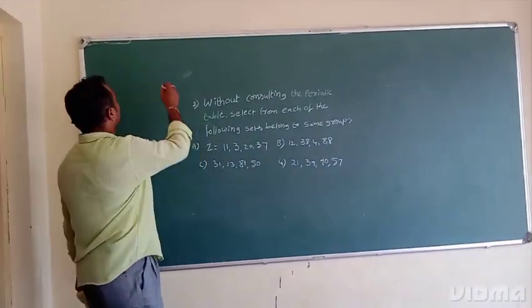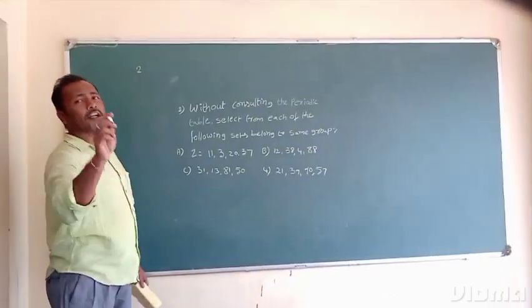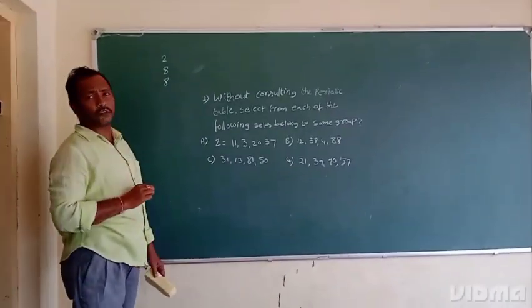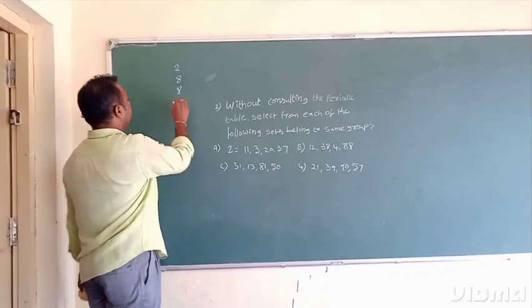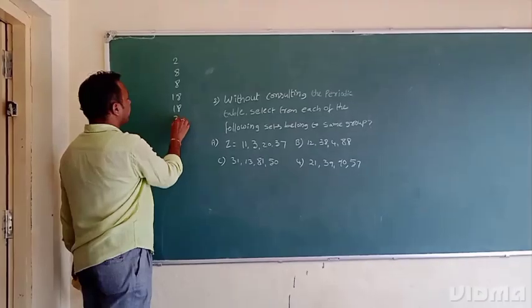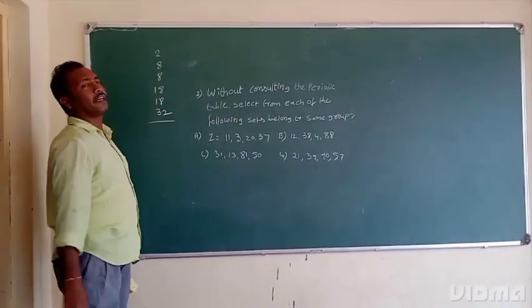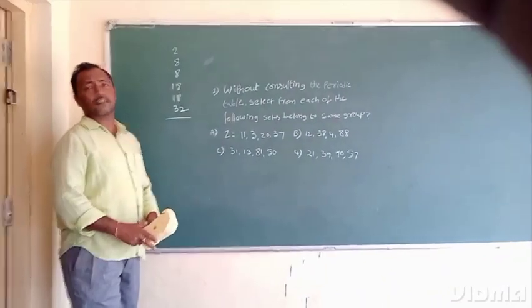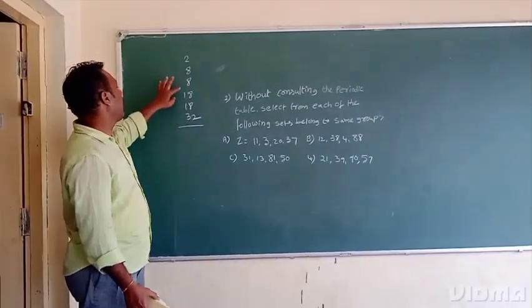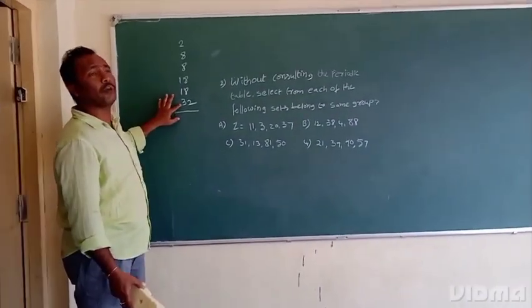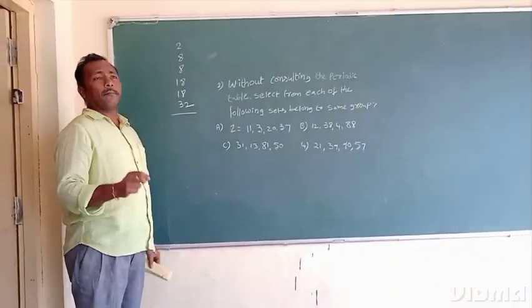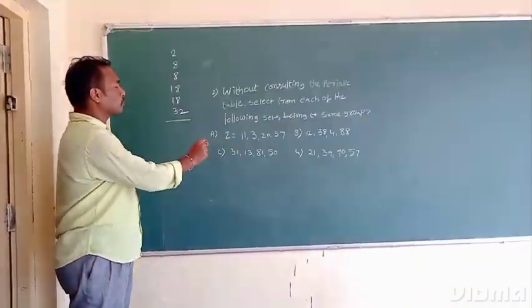First period has 2 elements, that is hydrogen and helium. Second and third period have 8 elements. Fourth and fifth period have 18 elements. Sixth period has 32 and seventh period is incomplete period. First period having only 2 elements is the shortest period. Sixth period having 32 elements is the longest period.